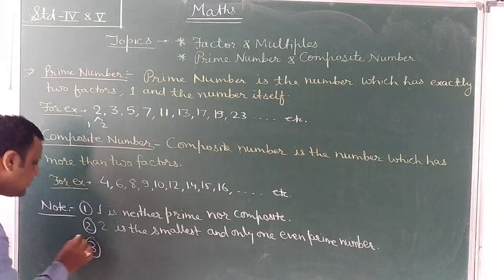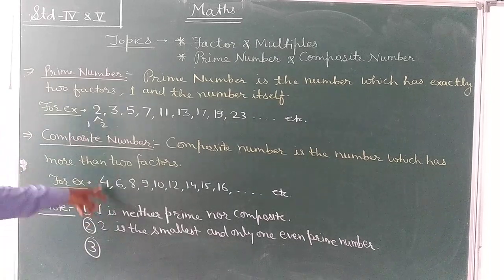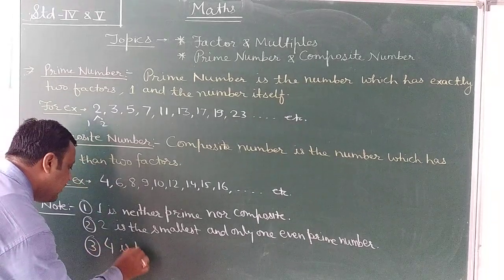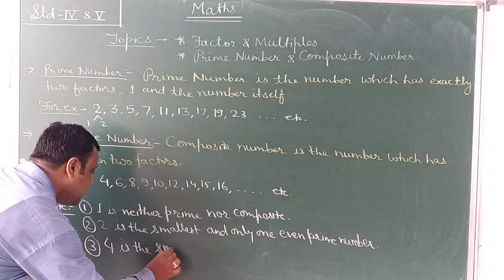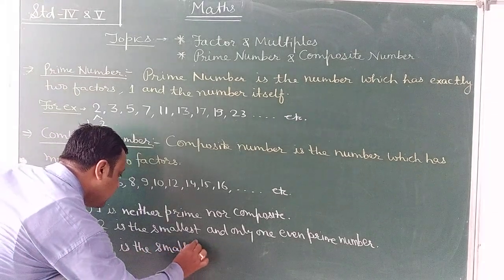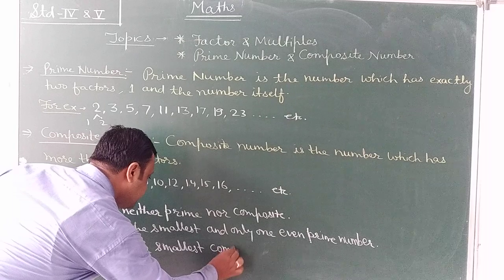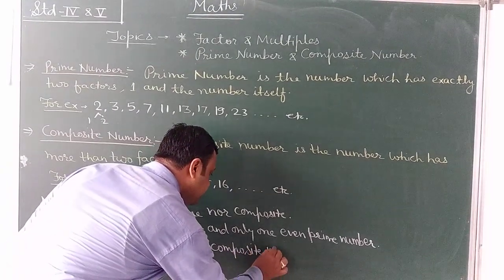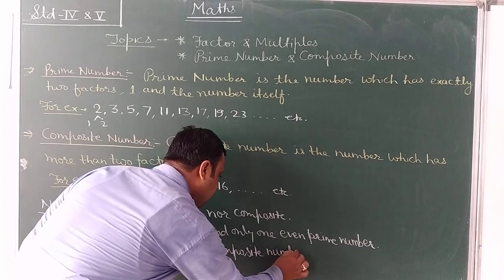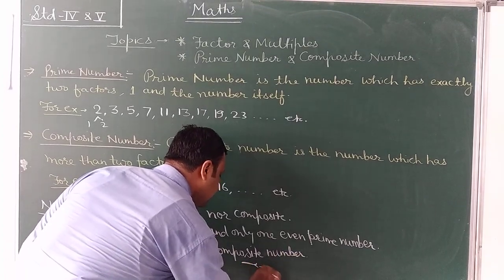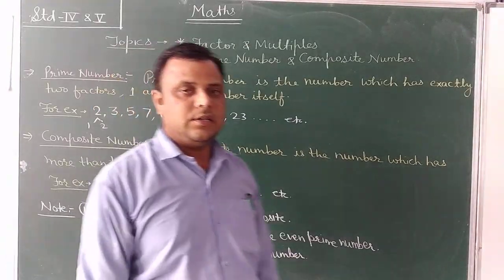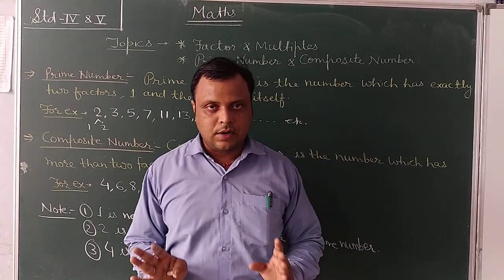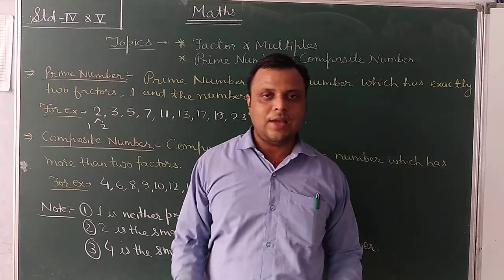A composite number is a number that has more than two factors. Numbers like 4, 6, 8, 9, 10, 12, 14, 15, 16, etc. are composite numbers. The smallest composite number is 4. Dear students, that is all about today's class. Perhaps you have understood everything. Thank you, have a nice time.